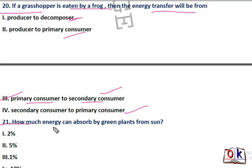Question 21: how much energy can be absorbed by green plants from the sun? Options are 2%, 5%, 1%, and 10%. Third one will be the right answer — 1% energy is absorbed by green plants. At the next trophic level, 10% energy is transferred according to the 10% law.